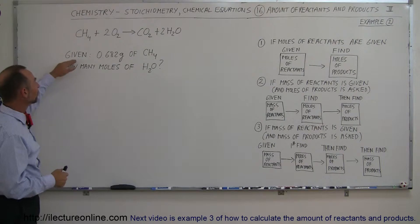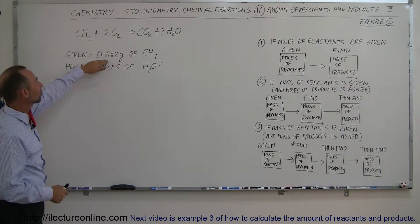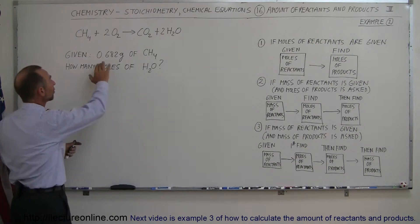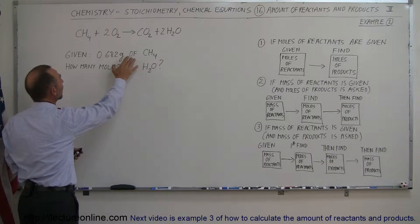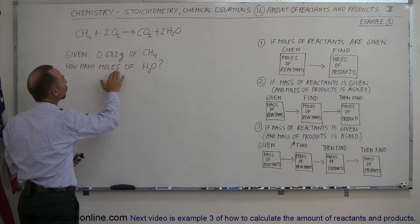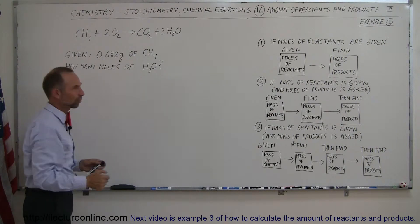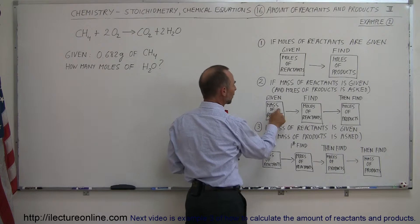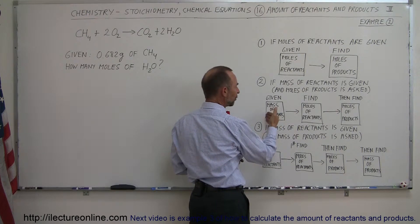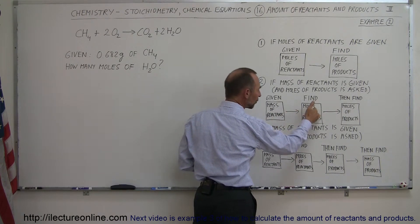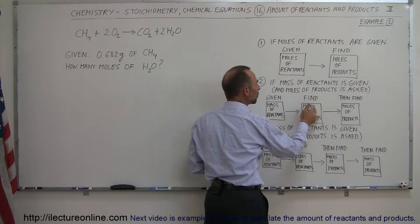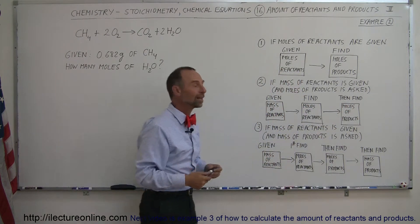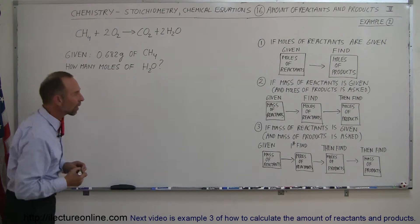Let's say they give you a mass of 0.682 grams of the initial reactant methane. So you have 0.682 grams of methane to start with, and they ask: how many moles of water will be produced in this reaction? This is the case where they give you the mass of the reactants, and it's a two-step process.